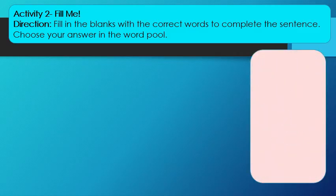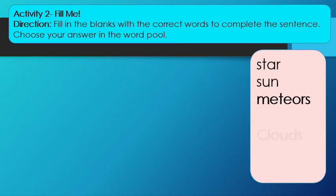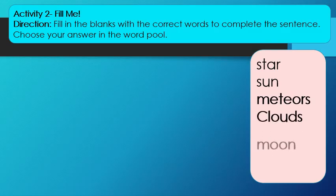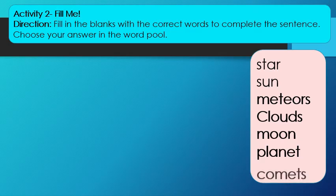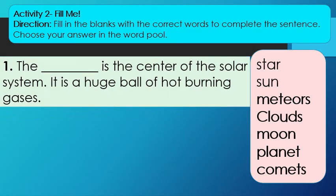Activity 2: Fill me. Fill in the blanks with the correct words to complete the sentence. Choose your answer in the word pool. Star, Sun, Meteors, Clouds, Moon, Planet, and Comets. Number 1: The blank is the center of the solar system. It is a huge ball of hot burning gases.